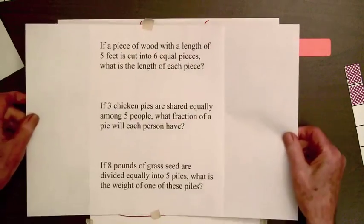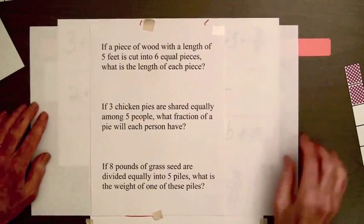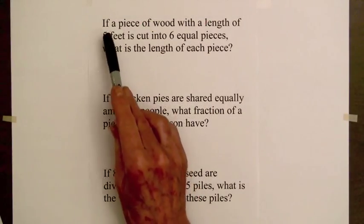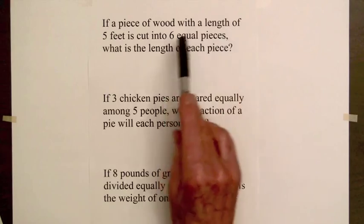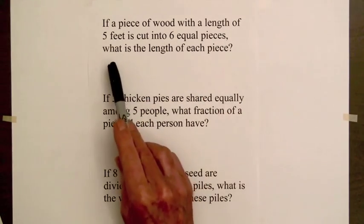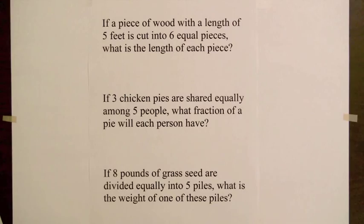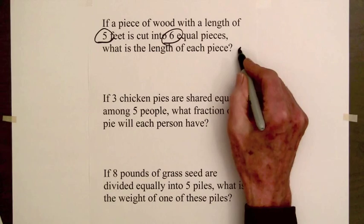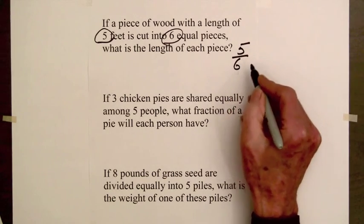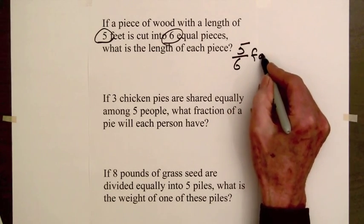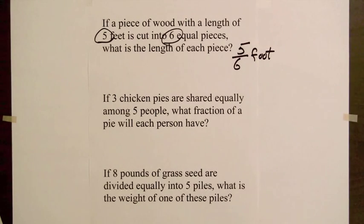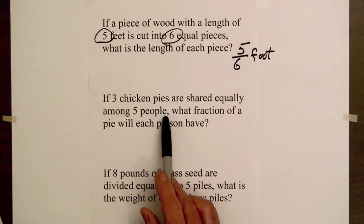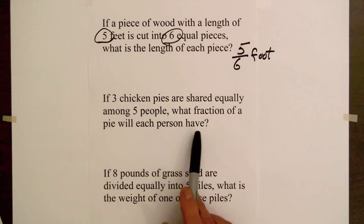Let's look at some examples. If a piece of wood with a length of five feet is cut into six equal pieces, what is the length of each piece? We simply divide five by six to obtain five-sixths of a foot. If three chicken pies are shared equally among five people, what fraction of a pie will each person have?